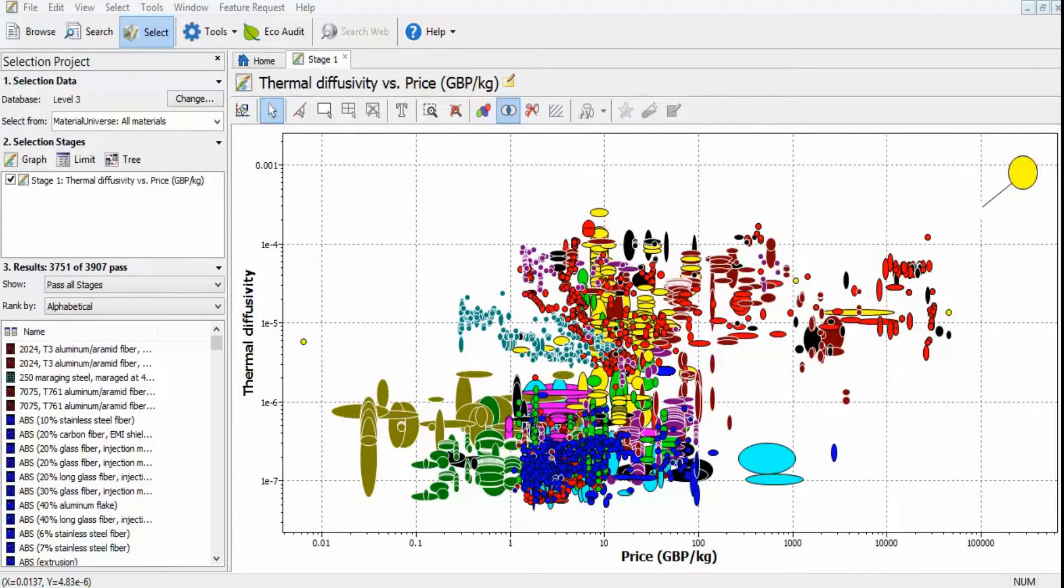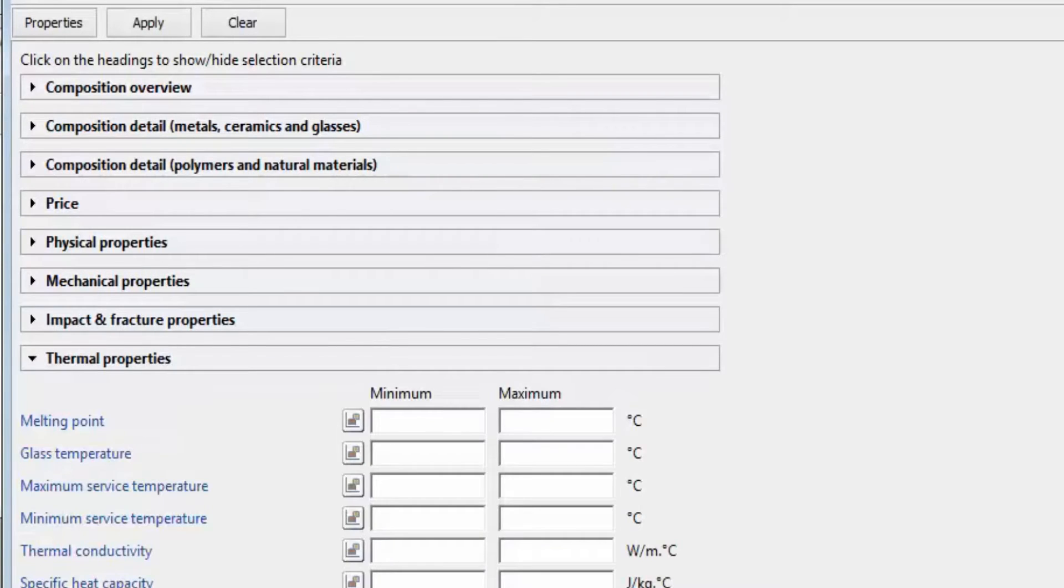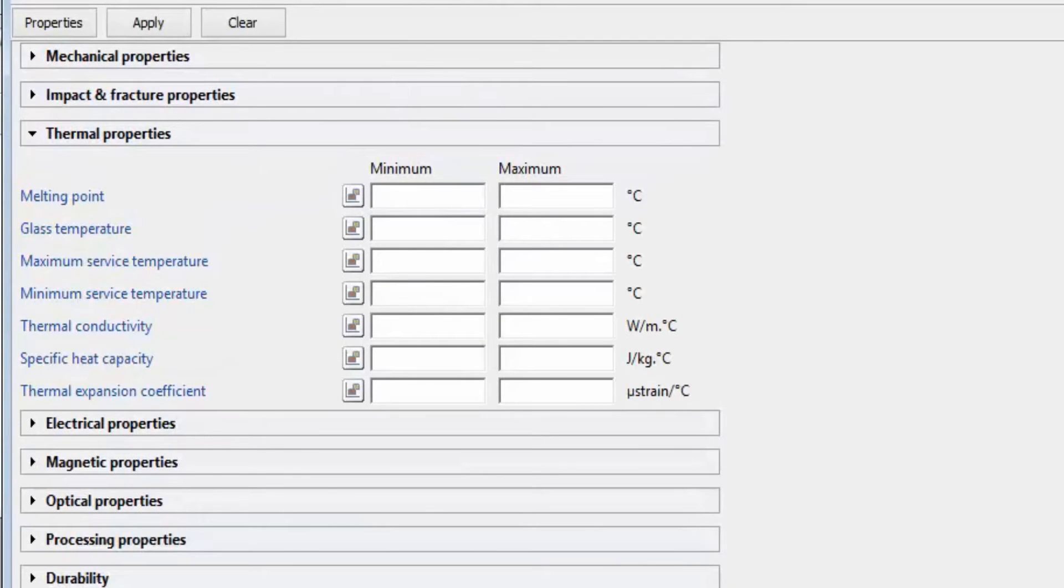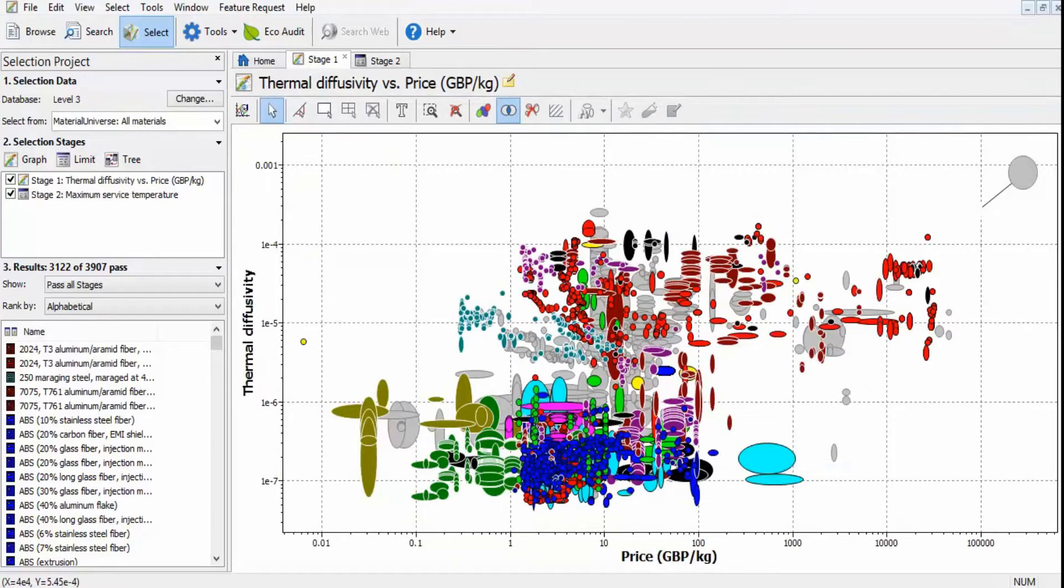We screen all possible materials in CES EduPack, entering the limits on a graph with cost and thermal diffusivity on the axes. By entering the maximum operating temperature required by the constraint, we can eliminate a large group of materials.